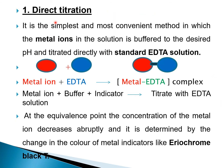The first type is direct titration — the simplest and most convenient method. The metal ions in a solution are buffered to the desired pH to maintain it, and then titrated directly with a standard EDTA solution. As shown in the diagram, the metal ion is directly titrated with EDTA to form a metal-EDTA complex at the endpoint.